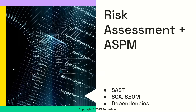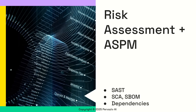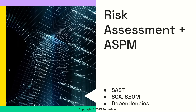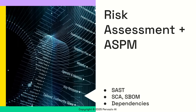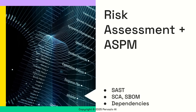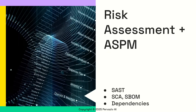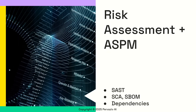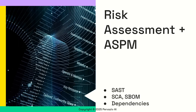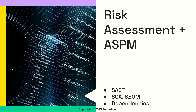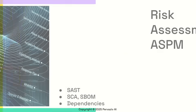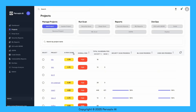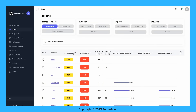Pervasive AI's solution pairs risk assessment with ASPM. This system unifies findings from all our security tools, including SAST, SCA, Software Bill of Materials, and dependencies. We prioritize risk with our proprietary algorithms and provide an AI risk score for all your projects.